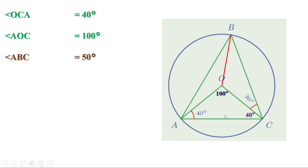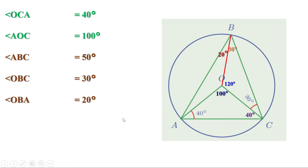Now join O to B. Triangle OBC is isosceles, so angle OBC equals 30 degrees. Then angle BOC equals 180 minus 60, which is 120 degrees. The total angle ABC is 50 degrees and this part is 30 degrees, so angle OBA equals 20 degrees. Since triangle AOB is isosceles, angle BAO also equals 20 degrees. The angles of triangle OBC are 120, 30, and 30 degrees. The angles of triangle ABC are 50, 60, and 70 degrees.